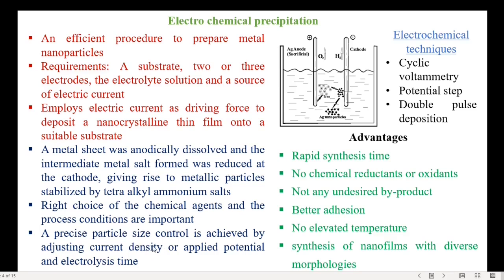Control on particle size is achieved by adjusting the current density or applied potential and electrolysis time. The different electrochemical techniques are cyclic voltammetry, potential step, and double pulse deposition. The advantages of electrochemical deposition are rapid synthesis time, no chemical reductants or oxidants, no undesired by-products, better adhesion, no elevated temperature, and synthesis of nanofilms with diverse morphologies.